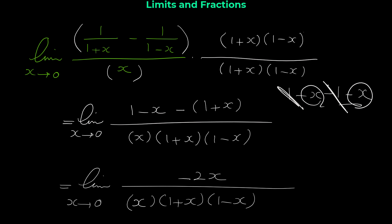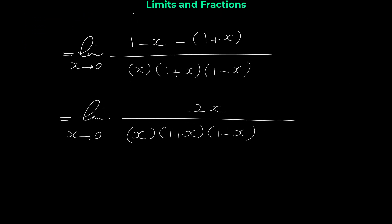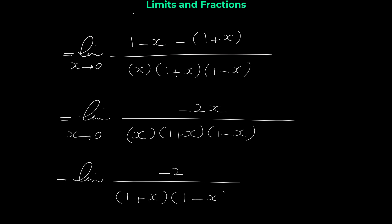By comparing numerator and denominator, we can see x is a common term. By canceling x, we have the limit of negative 2 over (1 + x)(1 − x) as x approaches 0.